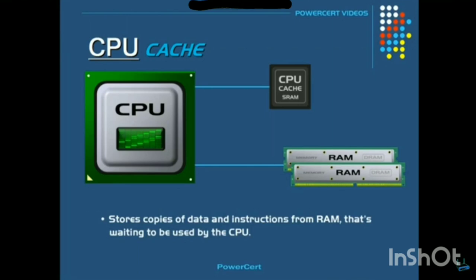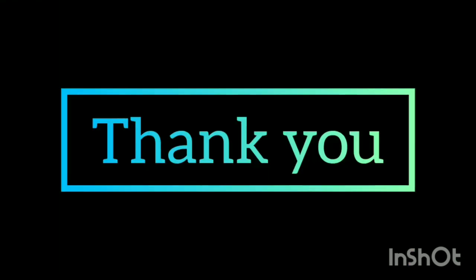Now comes cache memory. Cache memory is much faster than RAM. It is inside the CPU and is used for faster access of data.